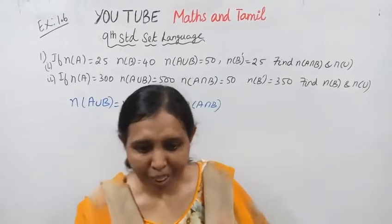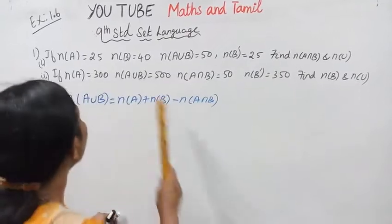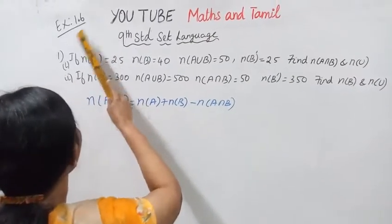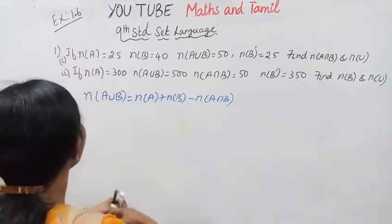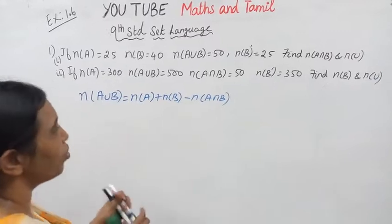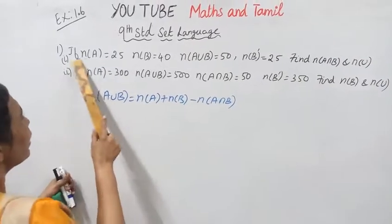Hello students, welcome to Max and Tramble Channel. Exercise 1.6. First is number 1 and 2. First is set form.